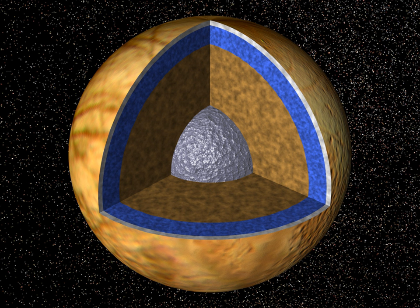Earth is the only known astronomical object to have bodies of liquid water on its surface, although several exoplanets have been found with the right conditions to support liquid water. For exoplanets, current technology cannot directly observe liquid surface water, so atmospheric water vapor may be used as a proxy. The characteristics of ocean worlds provide clues to their history and the formation and evolution of the solar system as a whole. Of additional interest is their potential to originate and host life.